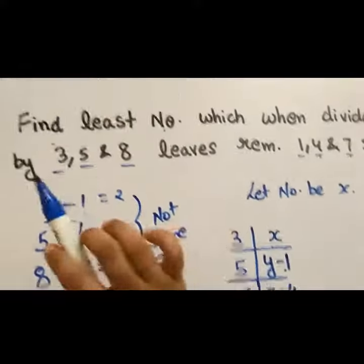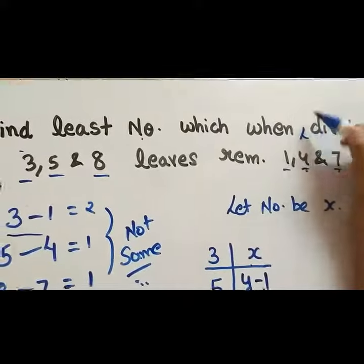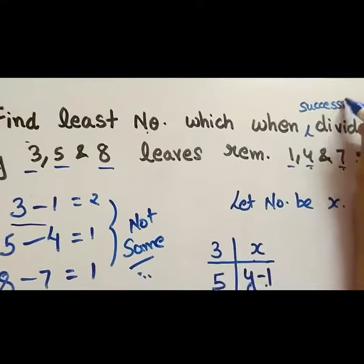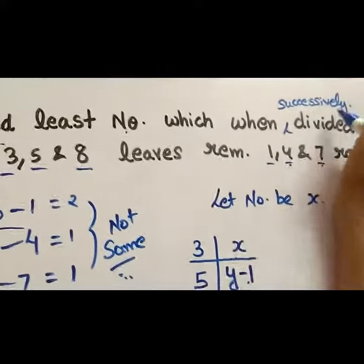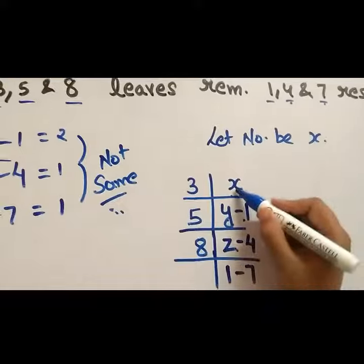Just calculate it now. Let me clear this, find least number which when successively divided. It is successively dividing. So now let's just calculate for x.